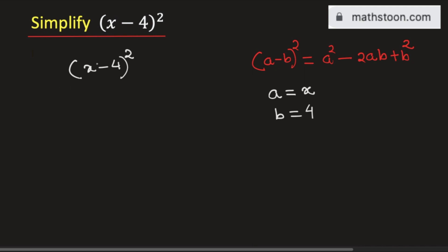Then this expression will become x² - 2 times x times 4 plus 4².